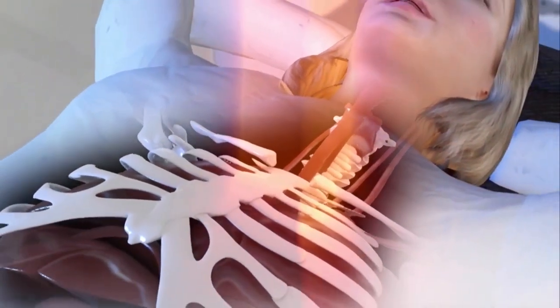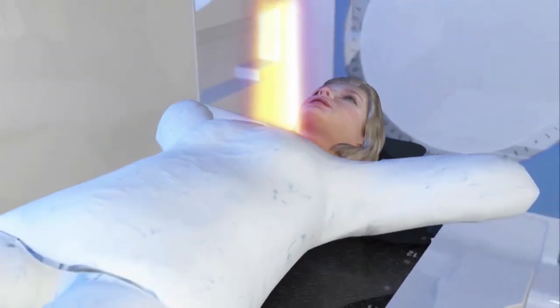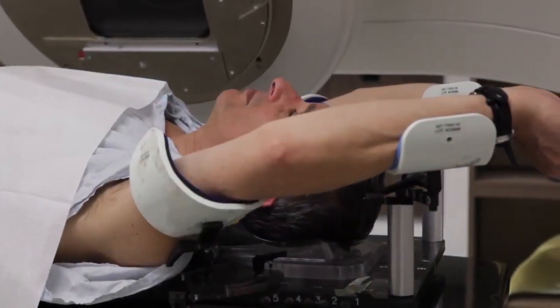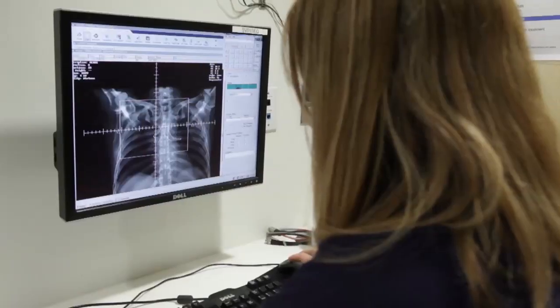In order to target the cancer cells, which are often deep inside the body, the radiation must pass through and come close to some healthy tissues, especially the skin. By delivering radiation over a series of days and weeks, healthy tissues are given a chance to repair themselves between treatments.